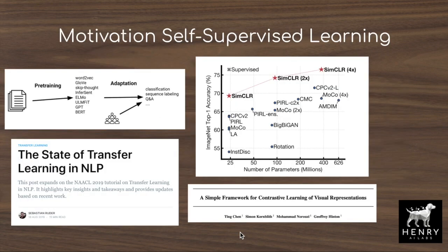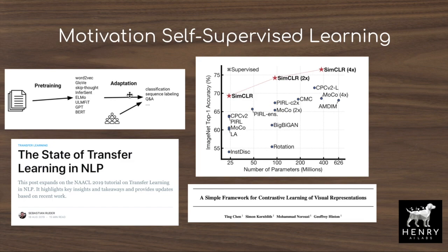We're interested in self-supervised learning because it's much easier to collect unlabeled data than labeled data. In natural language processing, this has been enormously successful by scraping massive text datasets from the internet and using them for self-supervised learning — automatically constructing tasks to predict a masked token, learning representations as in GPT or BERT, and then fine-tuning onto downstream tasks like question answering, natural language inference, summarization, named entity recognition, and other NLP tasks.